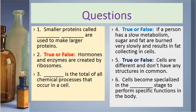Number four. True or false: If a person has a slow metabolism, sugar and fat are burned very slowly and result in fat collecting in cells.